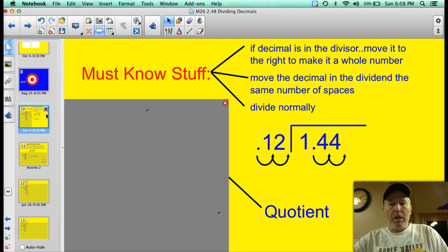Alright, first of all, if the decimal is going to be in the divisor position, which is in this number here, then you need to move it to the right to make that divisor a whole number. So in this case, 0.12, I moved the decimal two places to the right, and now I have 12. I've made it a whole number. But of course, I have to do the same thing to the dividend. I moved that two spots to the right as well. Next, we're just going to go ahead and divide normally, and we'll be done.